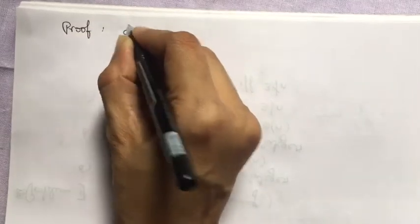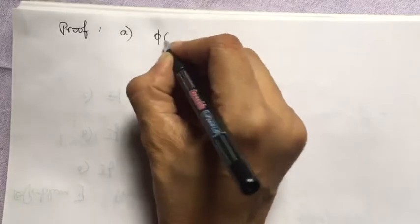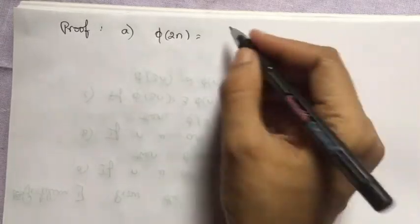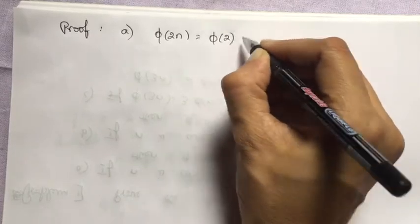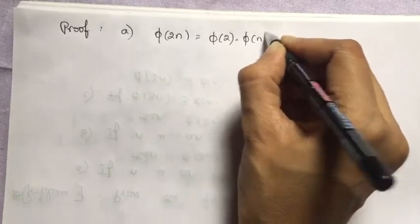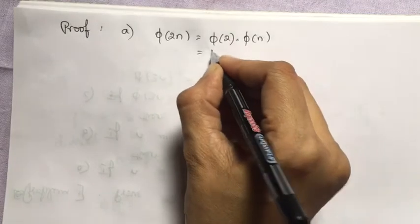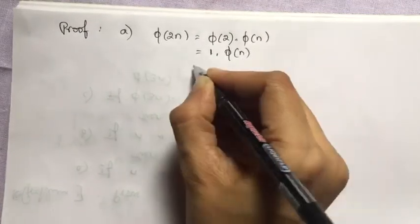First: prove phi(2n) = phi(n) if n is odd. phi(2n) = phi(2) × phi(n) since gcd(2, n) = 1 when n is odd. phi(2) = 1, so phi(2n) = phi(n).